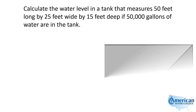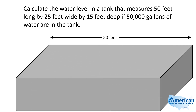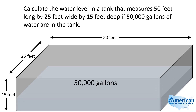Here we have a rectangular tank — it's 50 feet long, 25 feet wide, and 15 feet deep. They told us there's 50,000 gallons of water in the tank. On a problem like this, the width and the length are fixed — the 25 feet and the 50 feet cannot change. The only thing that changes is the water level. As you add more water, the level goes up, so the number of gallons in the tank determines what level the water is at.